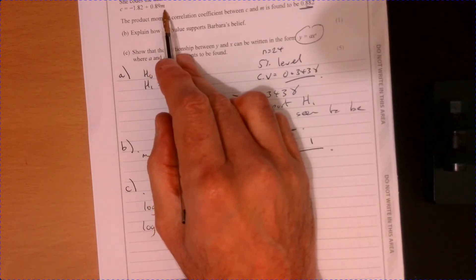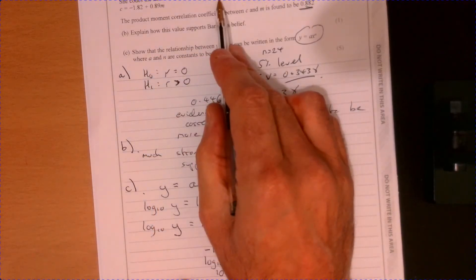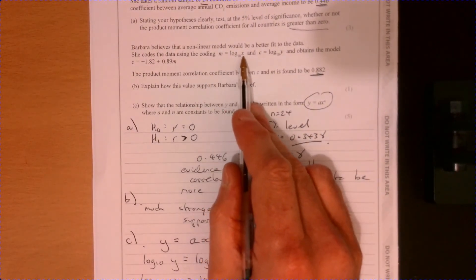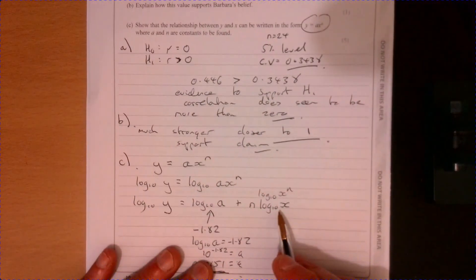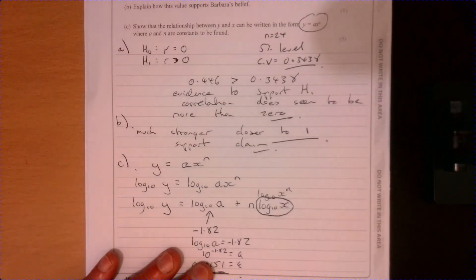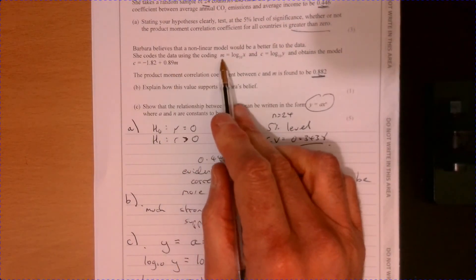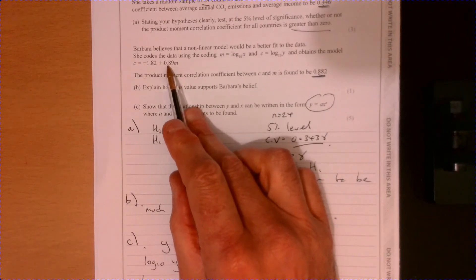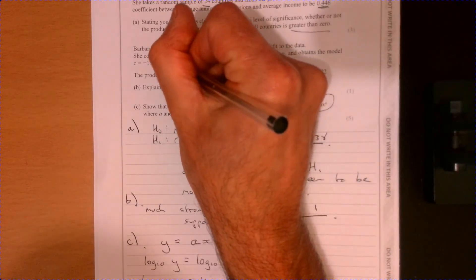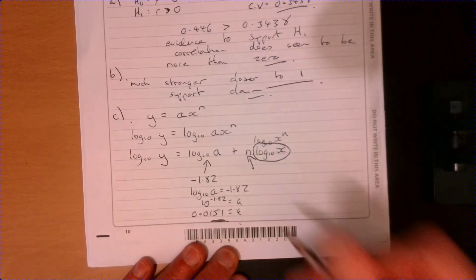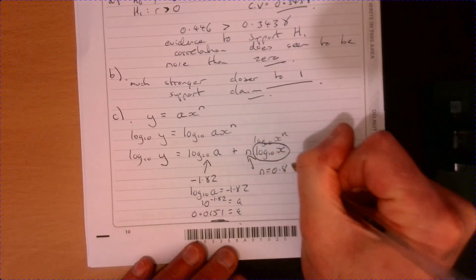So just looking at this bit just up here, 0.89, M. M is what? Sorry, it's out of shot, isn't it? M equals log base 10 X. That's that bit just there. That's the M part there. So this part, that's the N bit.